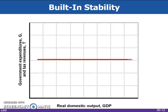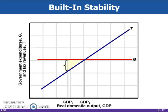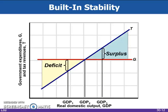This figure shows built-in stability. Tax revenues, T, vary directly with GDP, and government spending, G, is assumed to be independent of GDP. As GDP falls in a recession, deficits occur automatically and help alleviate the recession. As GDP rises during an expansion, surpluses occur automatically and help offset possible inflation.